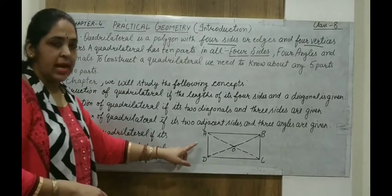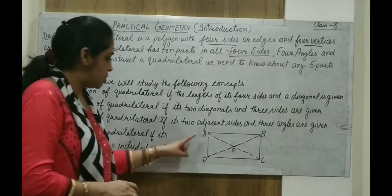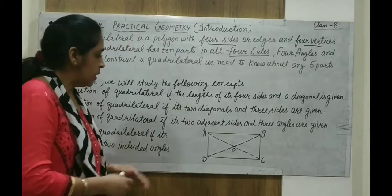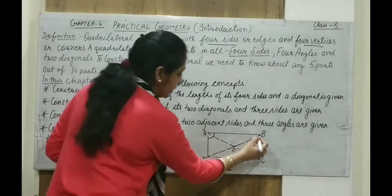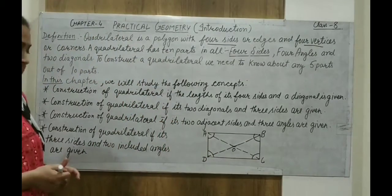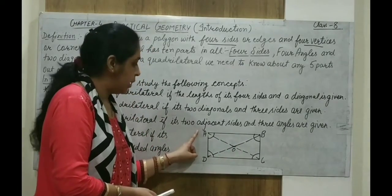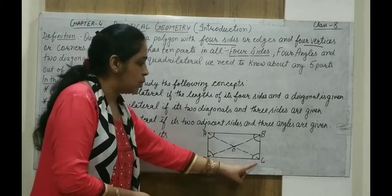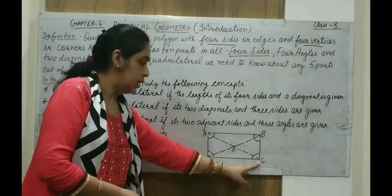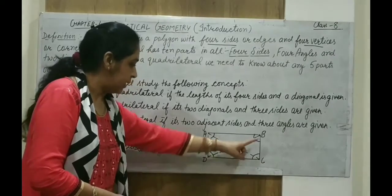In this quadrilateral, as you can see, ABCD is a four-sided polygon — a quadrilateral — in which AB, BC, CD, and DA are the four sides. Similarly, angle A, angle B, angle C, and angle D are the four angles. And the two diagonals are diagonal AC and diagonal BD. A diagonal is a line segment made by joining opposite vertices or corners.